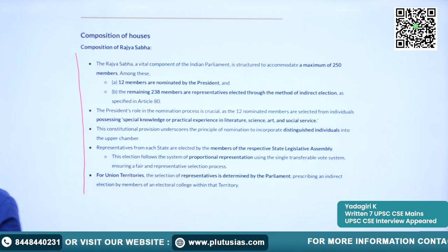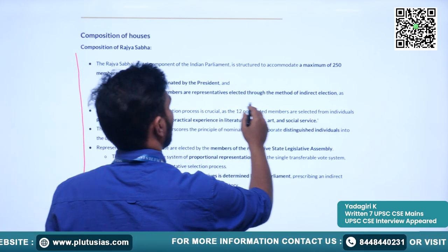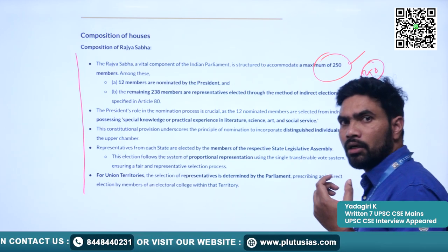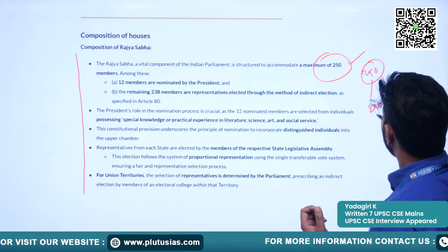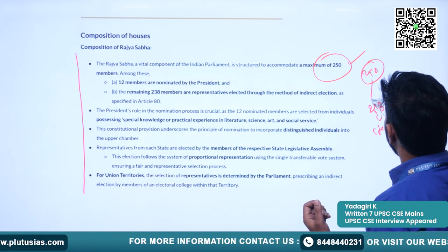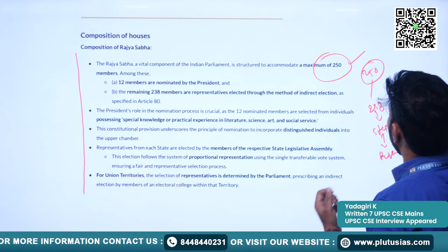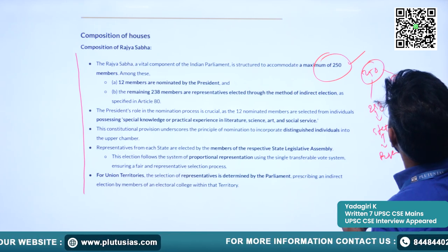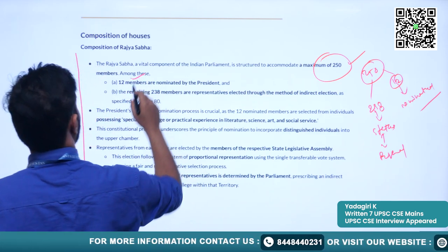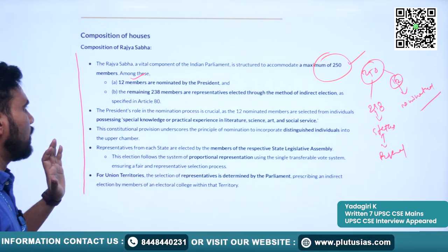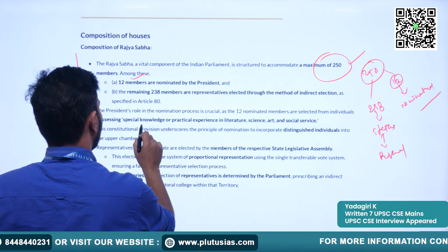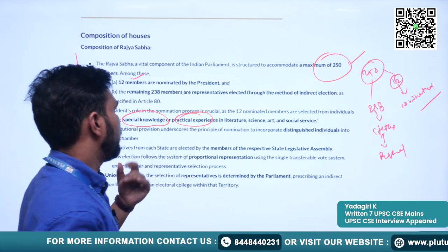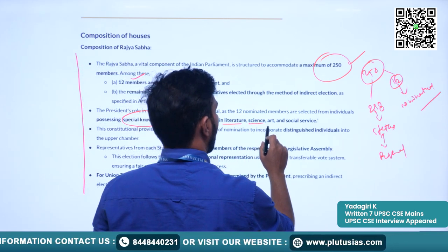Now let's understand the composition of Rajya Sabha. The Constitution mandates a maximum of 250 members. Of these, 238 members will be representing the states — the federal units. The remaining 12 members will be nominated members, nominated by the President. The background for nomination is that people possessing special knowledge or practical experience in the fields of literature, science, art, and social service will be nominated.